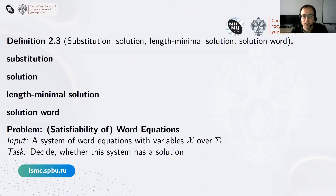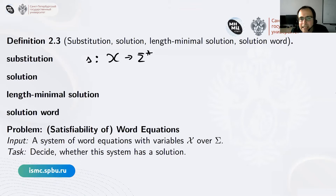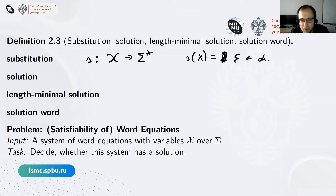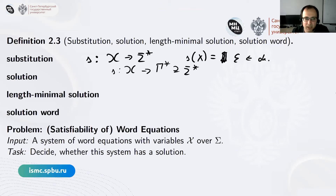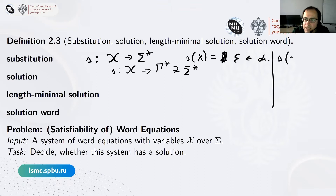Since this is an equation, we have a substitution which tries to make it a true equality. The substitution, denoted by s, assigns variables with words. I will usually assume it's slightly better not to assign empty words to variables. Formally we allow it, but it's better not to use it. The substitution extends to letters of sigma by mapping them to themselves, and to sequences as a homomorphism — applying it symbol by symbol.